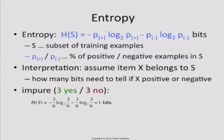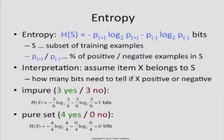Logarithms are base two. So for the 3-and-3 case, log of one-half is minus one, and minus one-half times minus one gives one-half. You get the same on the other side, so one-half plus one-half gives you one bit. And if the set is totally pure — four positives and zero negatives — you get P+ = 1, P- = 0. Zero log zero is zero by L'Hôpital's rule, and log one is zero, so one times zero is zero. So you need zero bits for the pure set.